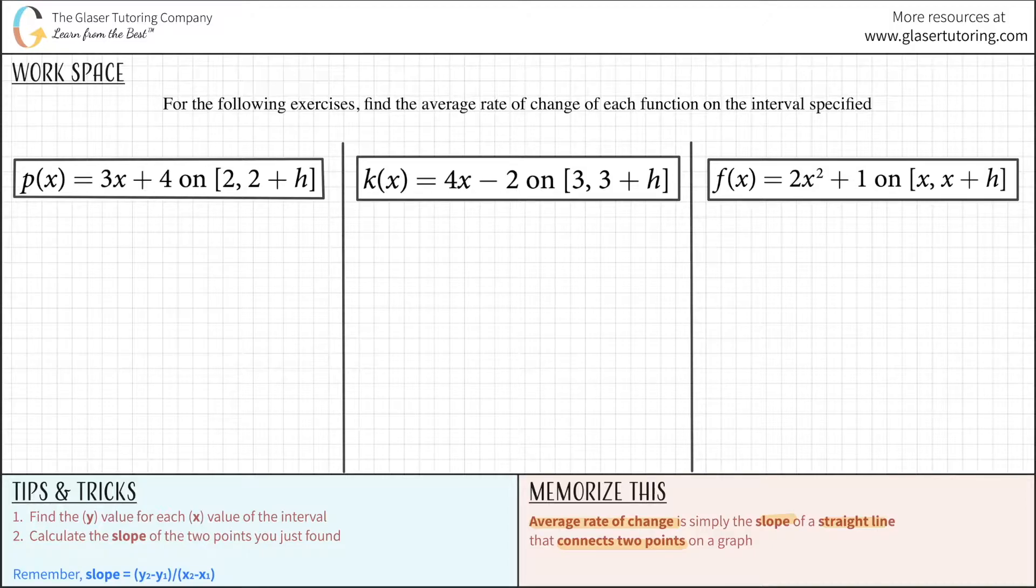So, for example, let's say we had a particular set of axes here, and you had a certain graph. Let's just pretend the graph looks like this. If you wanted to find the average rate of change, let's say from this point to this point, all you would have to do is just draw a straight line between the two and find the slope. That's it. You got to find the slope of this line, and that slope represents the average rate of change.